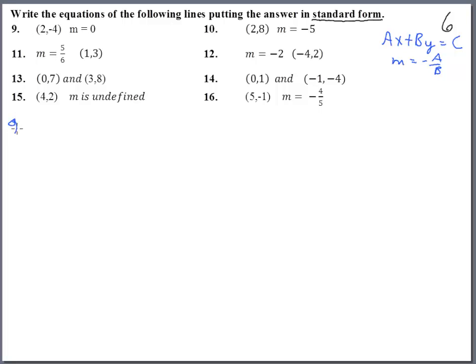Here, number nine - the slope is zero, so we're going to have zero for A and just something like y equals. Then we stick in two for x, that's gone, and negative four for y, we get negative four.